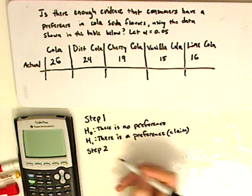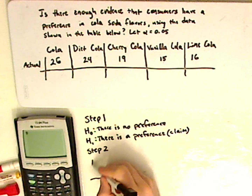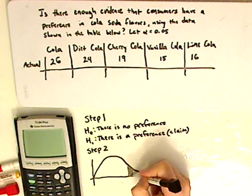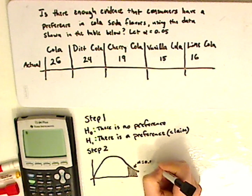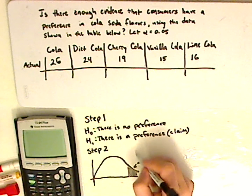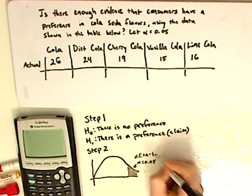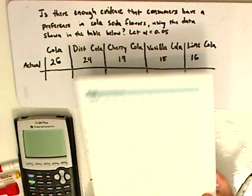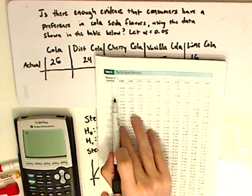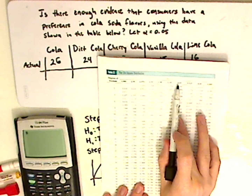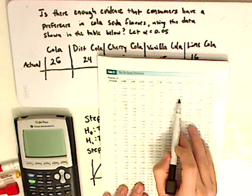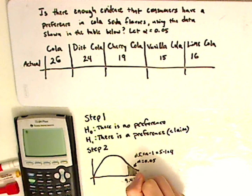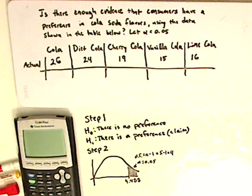Step number two is you want to find your critical region or rejection region. Chi-squared kind of looks like that. You need your alpha, which is 0.05. You also need your degrees of freedom. Degrees of freedom here would be n minus one, so it would be five minus one, which is four. Now you're going to need a table for this. Degrees of freedom is four and your alpha is 0.05, which is on top.